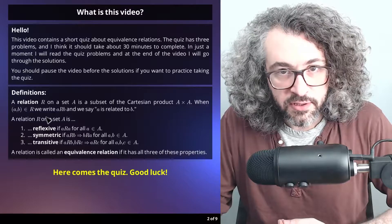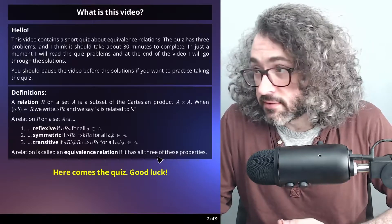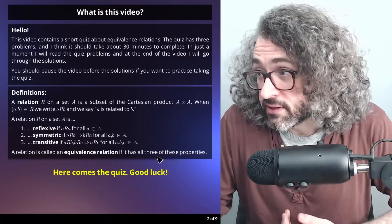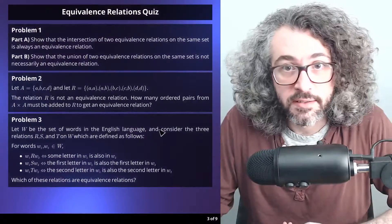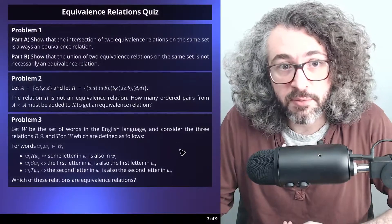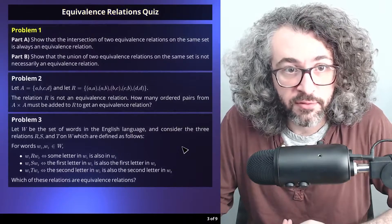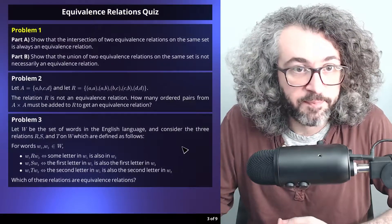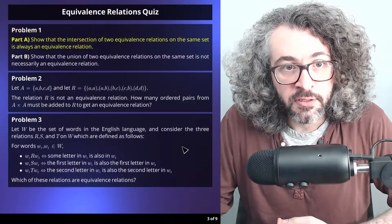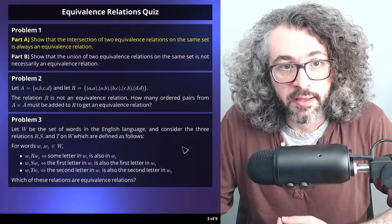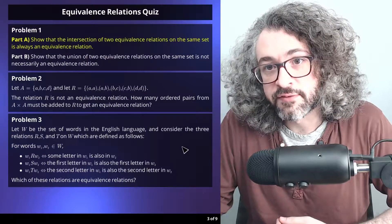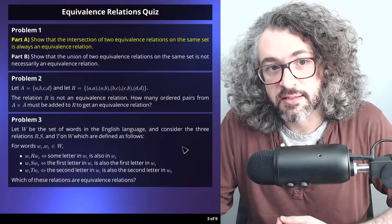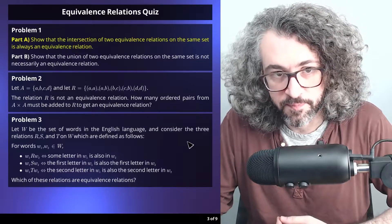That is what the quiz is going to be about, and the quiz will be on the next slide. It is three problems. Problem 1, Part A: Show that the intersection of two equivalence relations on the same set is always an equivalence relation.